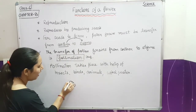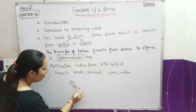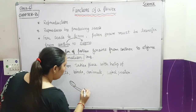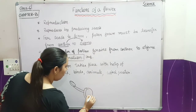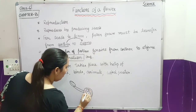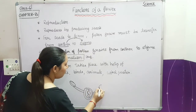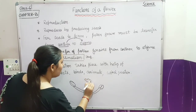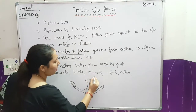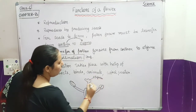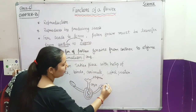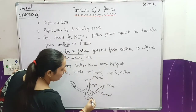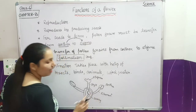I have drawn the picture of the anther, which is attached to a filament — this is the male part. Then I have drawn the ovary, and inside it is an ovule. The upper structure is the stigma, below it is the style, then the anther, then the filament, and at the base is the ovary with the ovule inside.